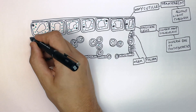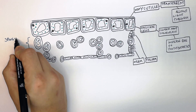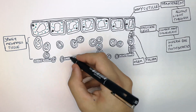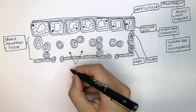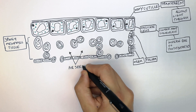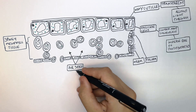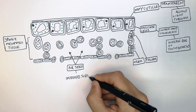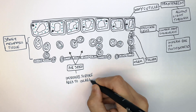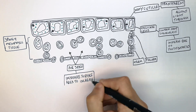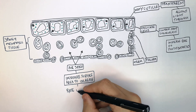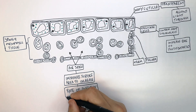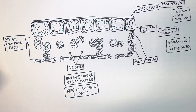The next part is the spongy mesophyll tissue, which contains air spaces. Air spaces increase the surface area of the mesophyll layer, and that then increases the rate of diffusion of gases through the mesophyll layer.